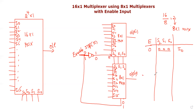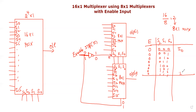The first 8 combinations — 0,0,0 through 0,1,1 — correspond to inputs I0 through I7 in the first MUX. The same 8 combinations are then repeated for the second MUX, selecting I8 through I15. So I7 to I15 covers the second group of inputs.